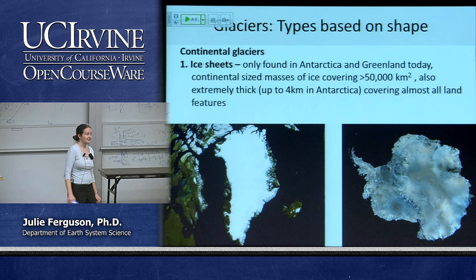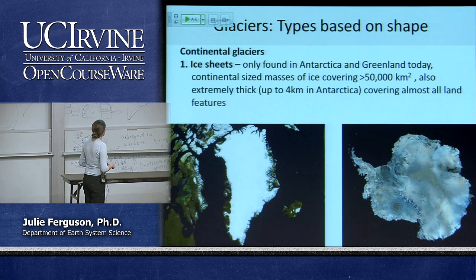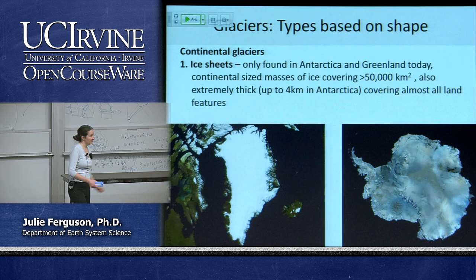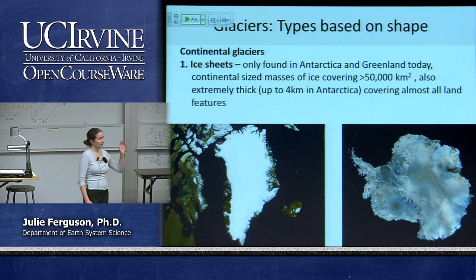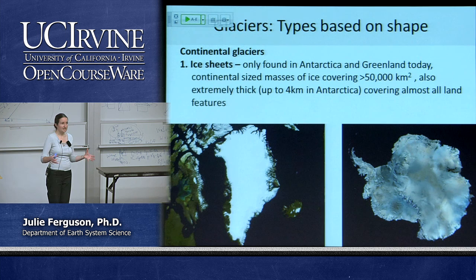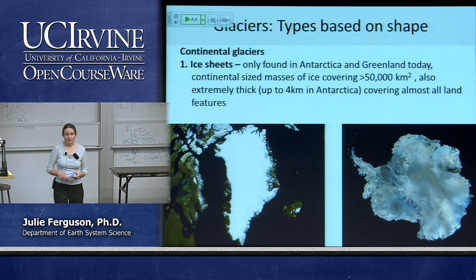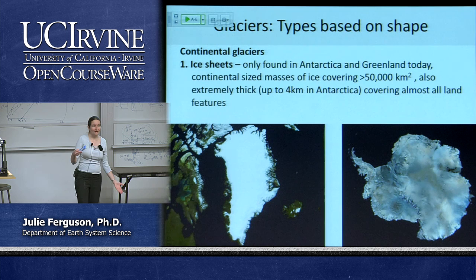Our continental-sized glaciers are ice sheets, greater than 50,000 km². We only have two today: one on Greenland and one on Antarctica. Antarctica has at least 10 times as much ice as Greenland. Twenty thousand years ago there were also big ice sheets over North America and Europe. These sheets are also incredibly thick — mountain glaciers may be a few hundred metres, but ice sheets can reach up to 4 kilometres — 4,000 metres — of ice.